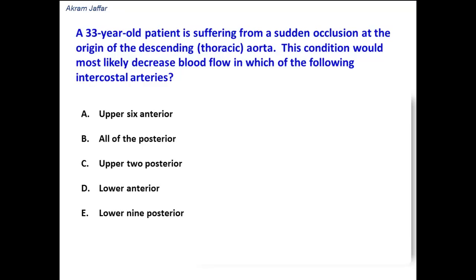A 33-year-old patient is suffering from a sudden occlusion at the origin of the descending thoracic aorta. This condition would most likely decrease blood flow in which of the following intercostal arteries? In other words, this question is relating to the intercostal branches of the descending thoracic aorta.